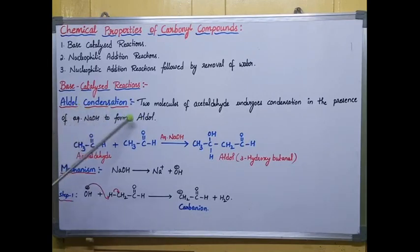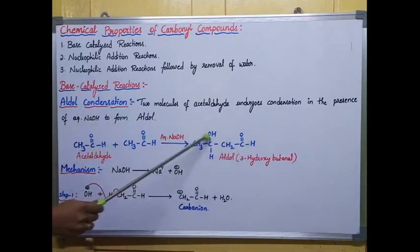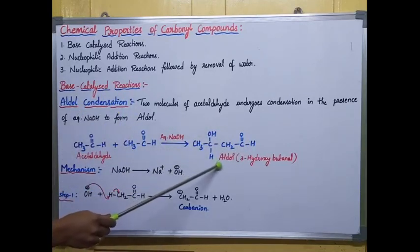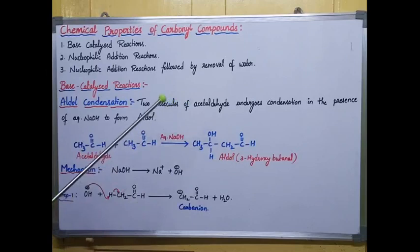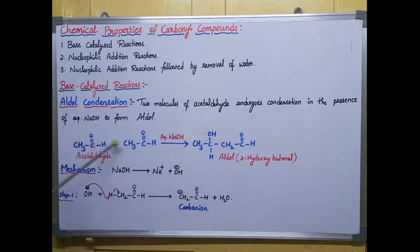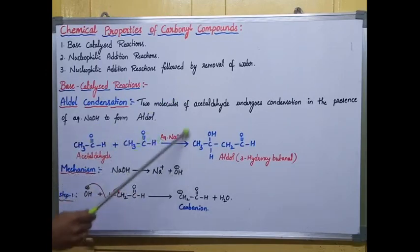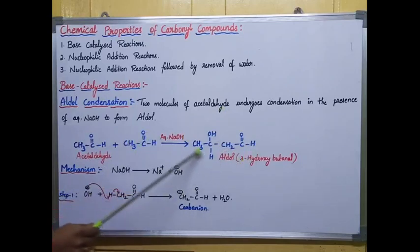Aldol is a compound which consists of two functional groups: one is aldehyde and the other one is alcohol — so the name indicates 'aldol.' In this reaction, two molecules of acetaldehyde condense in the presence of sodium hydroxide, producing a new compound that is aldol.